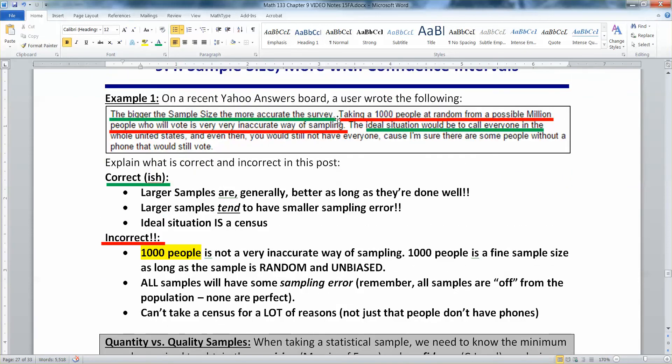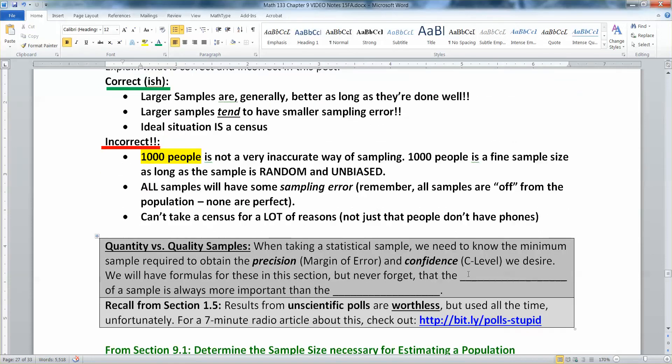Which means you're always going to be off there. So the red part in particular is the bad part. The thousand people at random is a bad way to do it, a very inaccurate way. It depends on what they mean by inaccurate, but if you're saying bad that's not true.